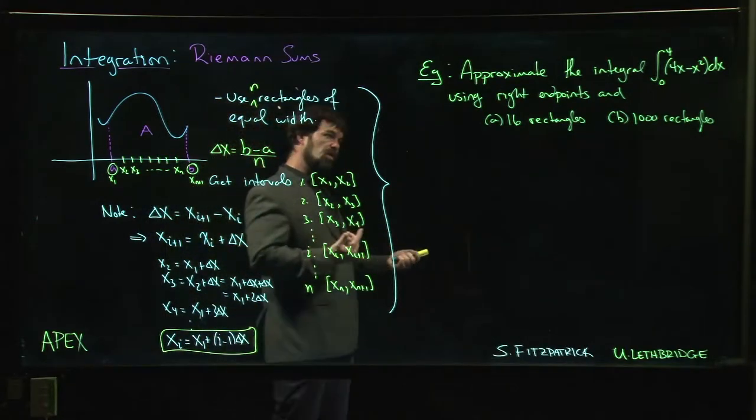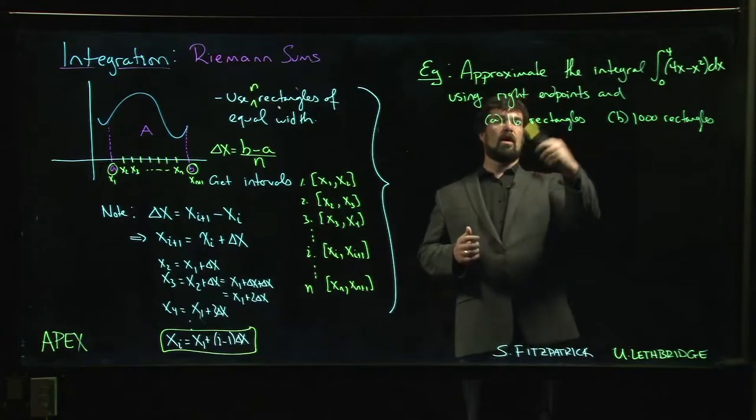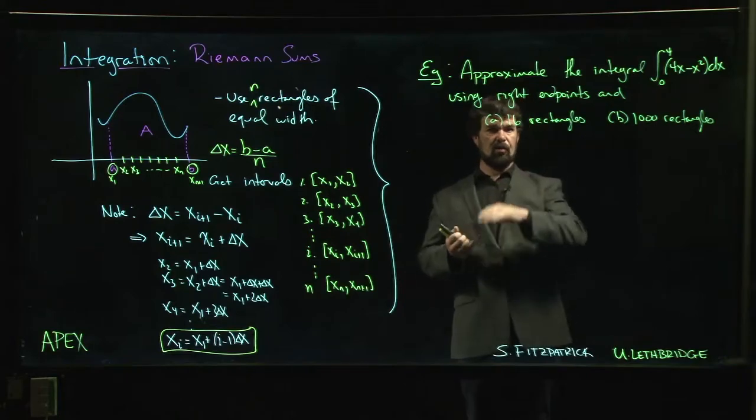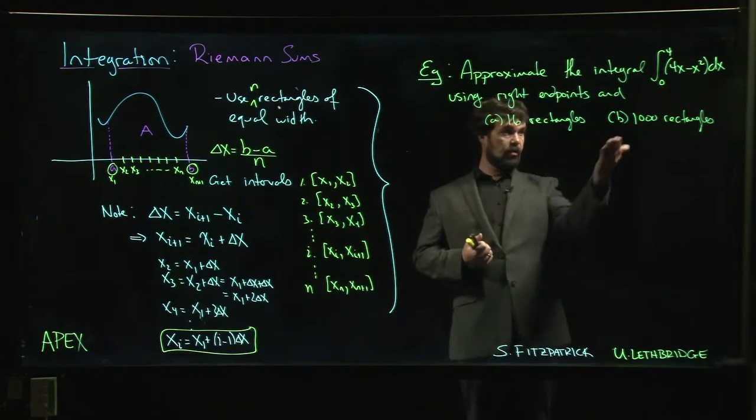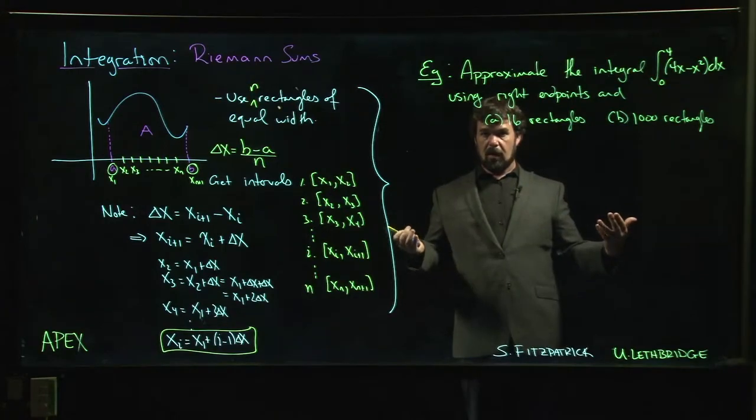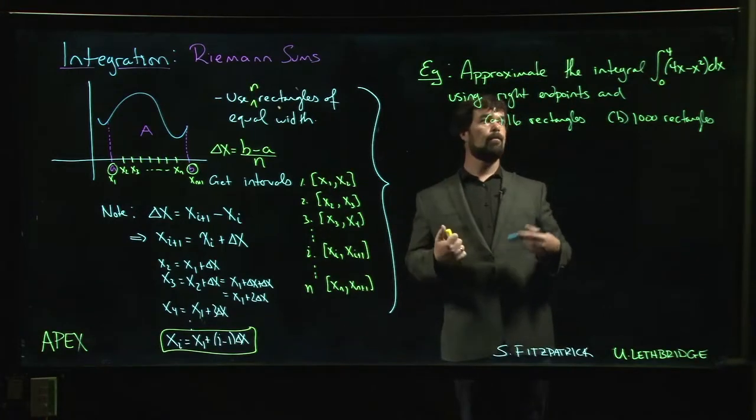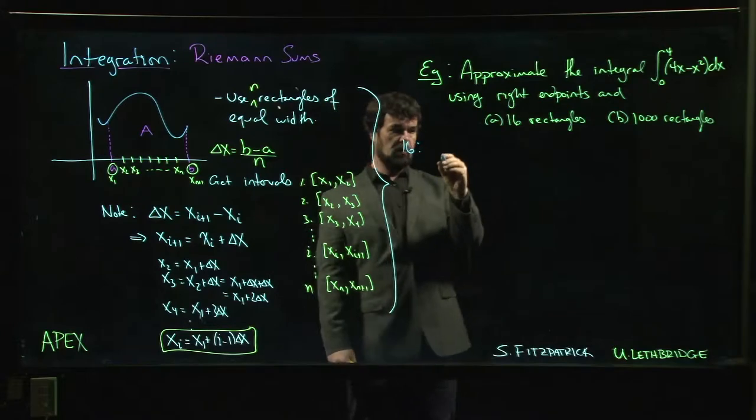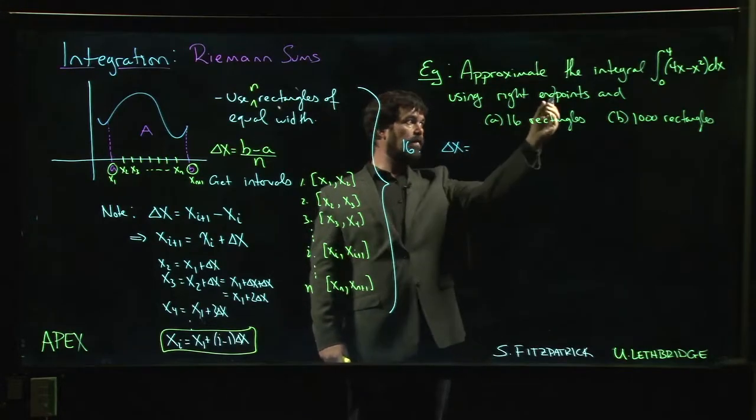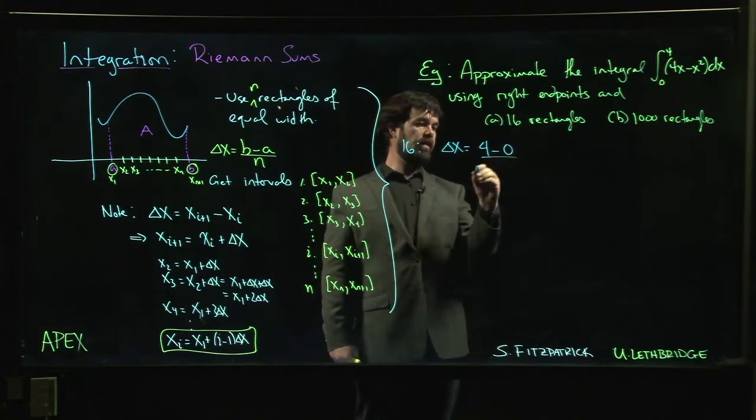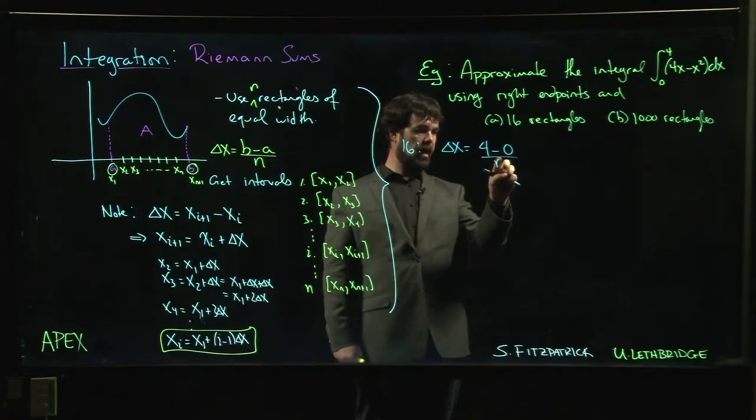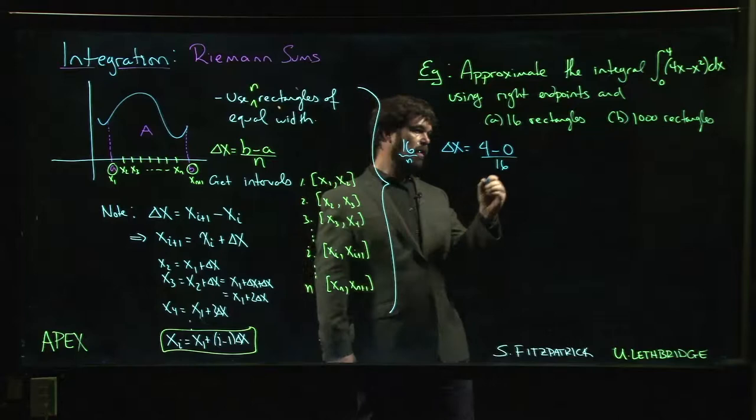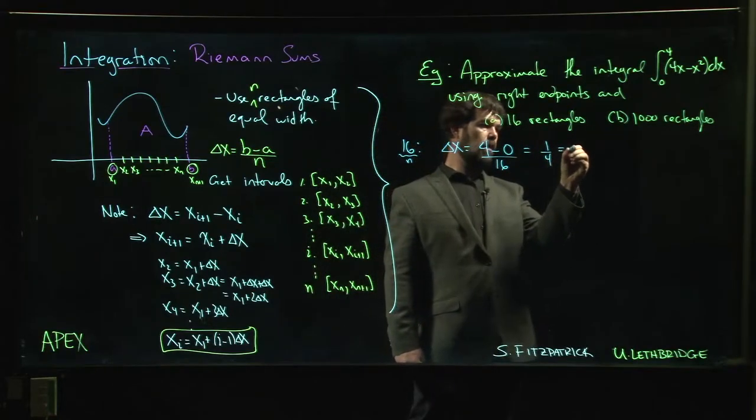This can be useful when we're coming to a problem like this where we want to start increasing the number of rectangles—16 rectangles, 20 rectangles, 100 rectangles, 1000 rectangles. Obviously we need to be able to do this efficiently. So for 16 rectangles, we can start with our delta x. That's easy enough: endpoint minus left divided by n. So n in this case is 16, so we get 1 over 4, or if you like, 0.25.